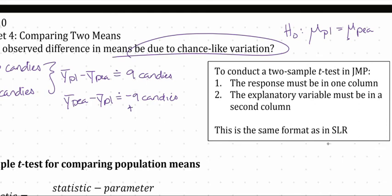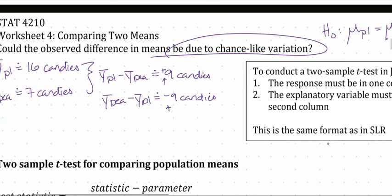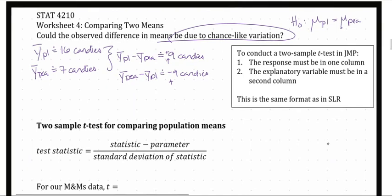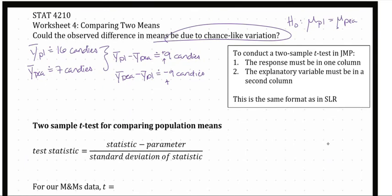That negative matters, just as the positive implied in positive 9 matters. It tells us which of those two groups — plain or peanut — had more candies on average. When we do Ȳ-peanut minus Ȳ-plain, it tells us that on average there are 9 fewer candies in the plain group than in the peanut group. Just as Ȳ-plain minus Ȳ-peanut tells us that on average there are 9 more candies in the plain group than the peanut group. So the sign tells us relatively which group has a higher mean.